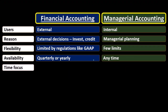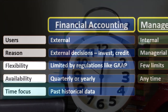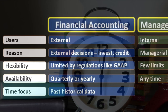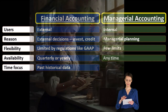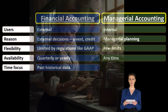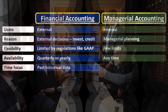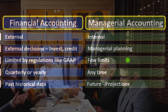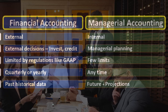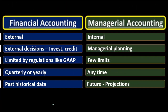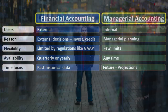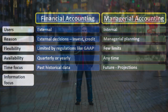The time focus for financial accounting is typically the past — we're looking at historical data. Investors will project into the future, but from the company's side, we're putting together what happened as accurately as possible, and then investors can make future projections based on that. Managerial accounting usually has a future focus — we're thinking about what we can do going forward to increase production and improve performance.